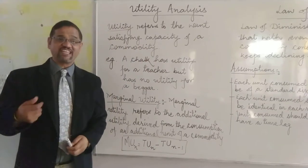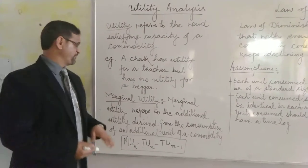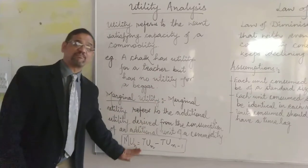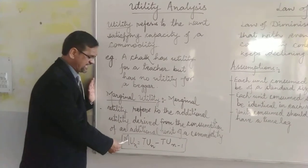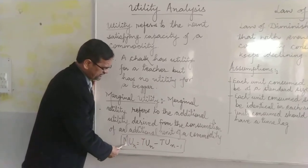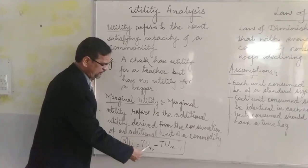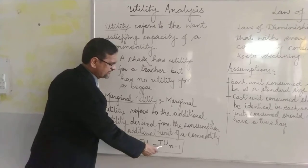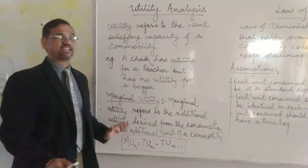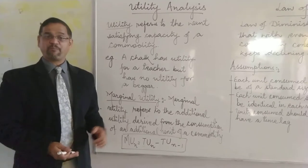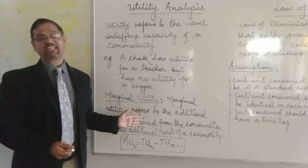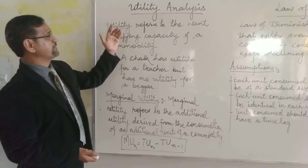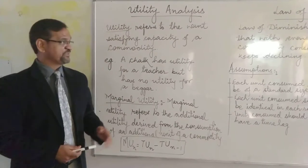I have told you the definition of utility and the meaning of marginal utility, and how we calculate it. The formula is: marginal utility of the nth item will always be equal to total utility of the nth item minus the total utility of the (n−1)th item. I hope I've been able to clear the concept of utility altogether.